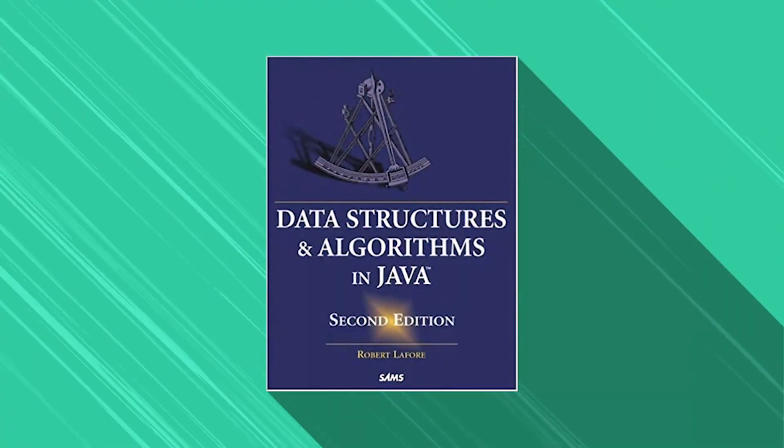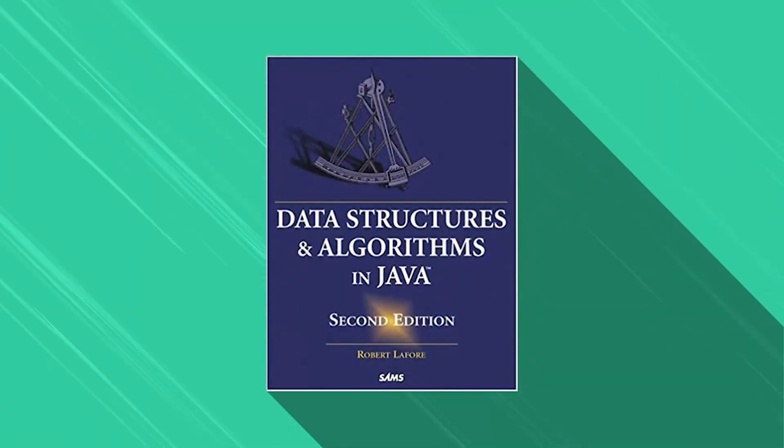Next, we have Data Structures and Algorithms in Java. Robert LaFour is one of the most renowned authors in computer science, so you can expect his name on one of the best textbooks in DSA. This book highlights the basics of DSA in Java, and the author focuses on providing easy-to-understand examples. He breaks complex examples into smaller and more manageable parts, so it helps readers get a firm grasp on the topic. You'll get a lot of sample programs, and there will be some executable programs that you can run in the web browser.